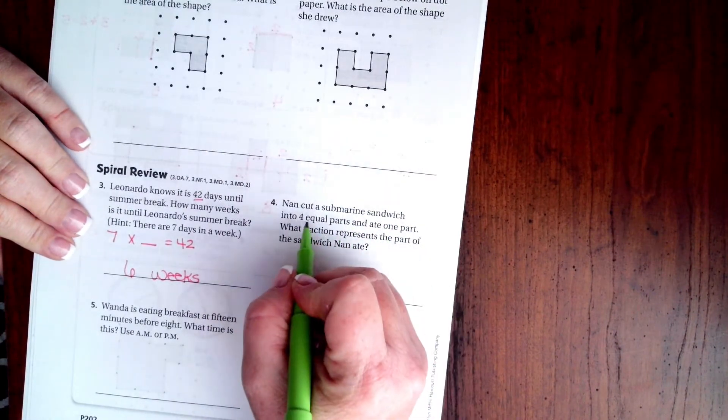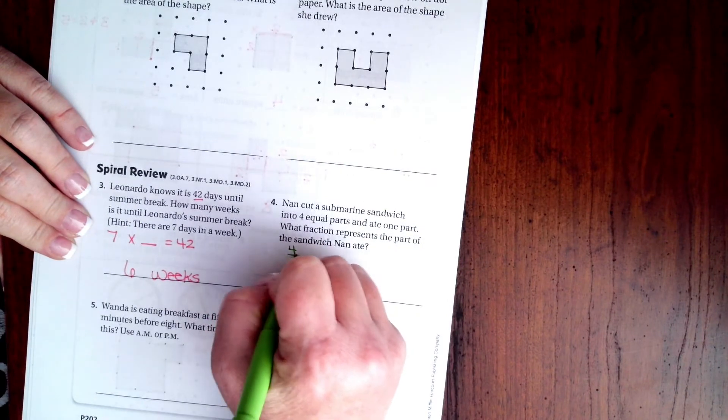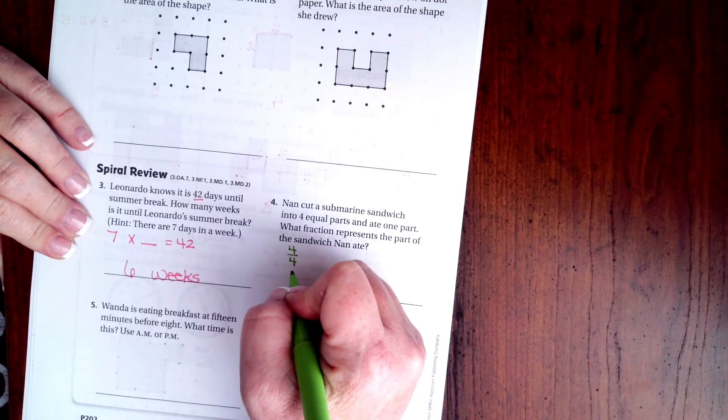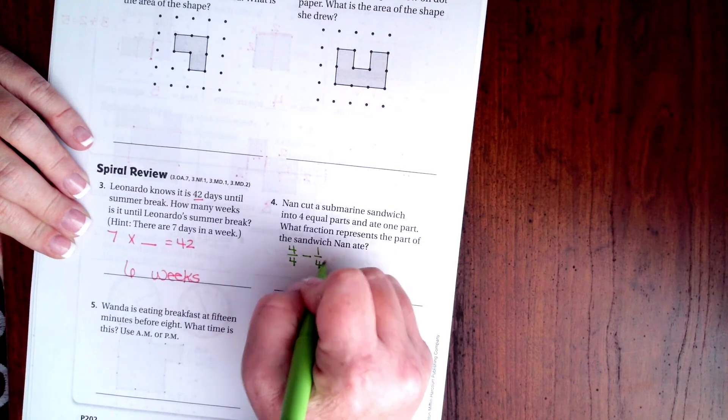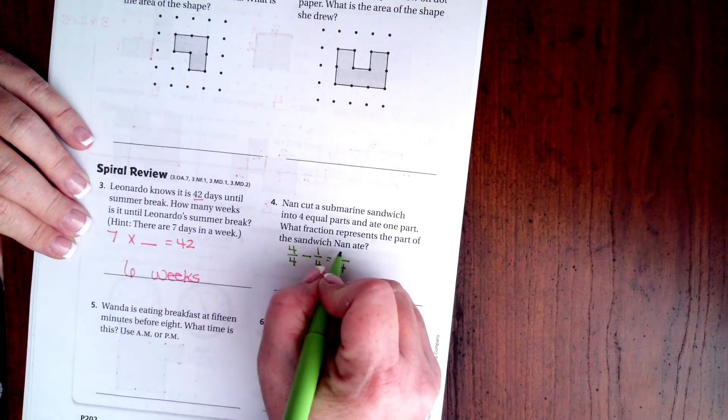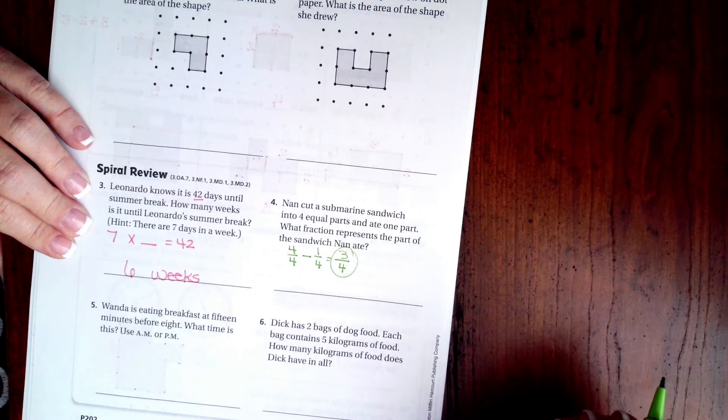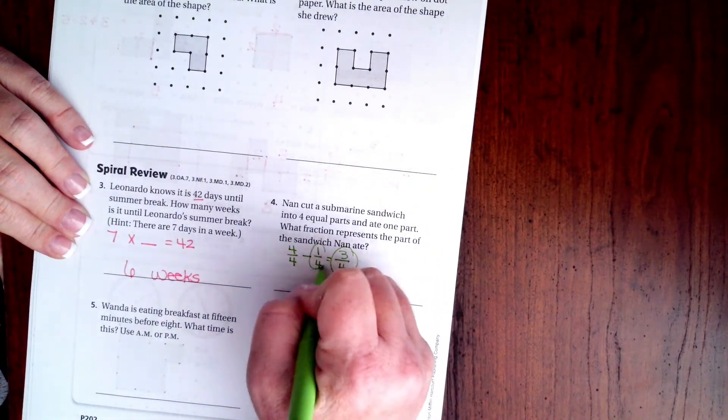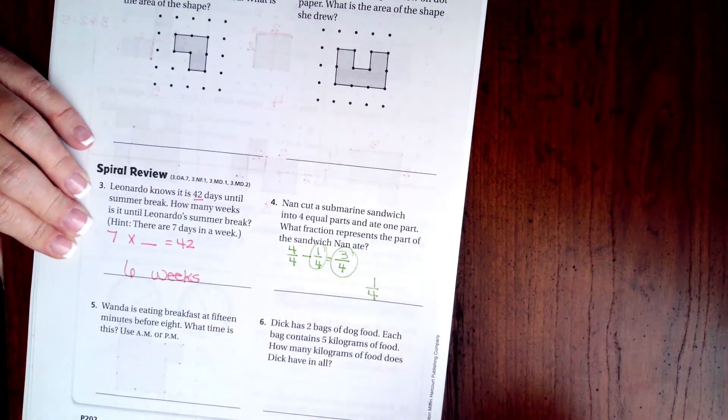Nan cut a submarine sandwich into 4 equal parts and ate 1 part. So 1 submarine sandwich, it's 4 over 4 is equal to 1. And she ate 1 of those parts. So we're going to carry the denominator over. And then 4 minus 1 is 3, 3 quarters of her sandwich. But what's the portion that she ate? Well, the portion she ate is that 1 quarter. So 1 quarter, 1 quarter is your answer.